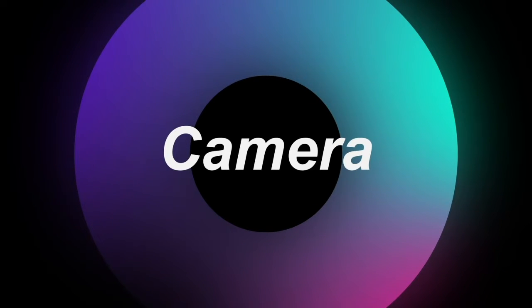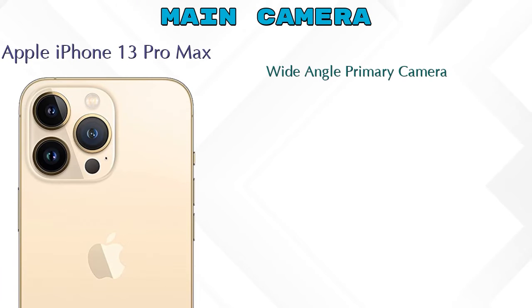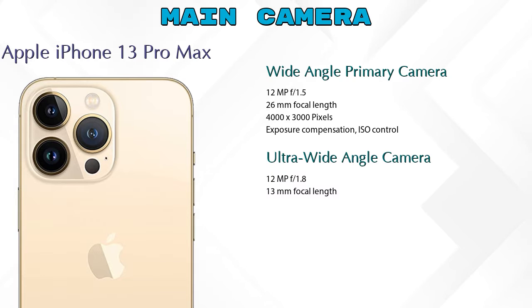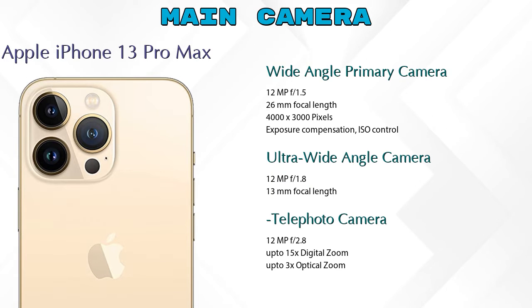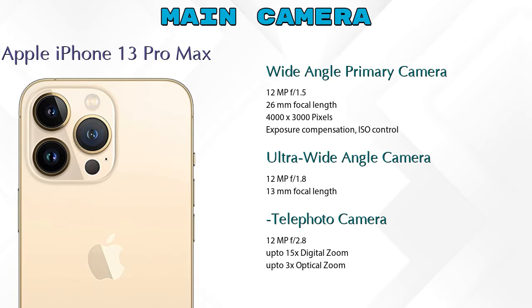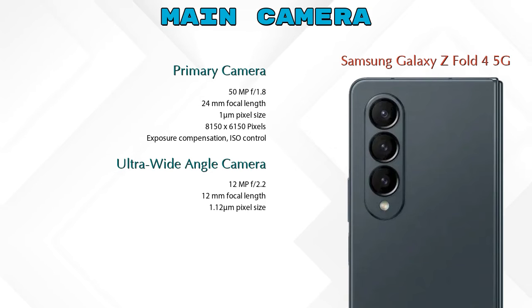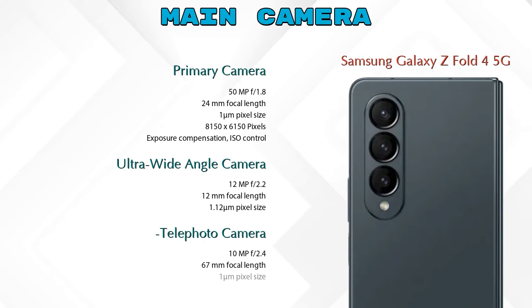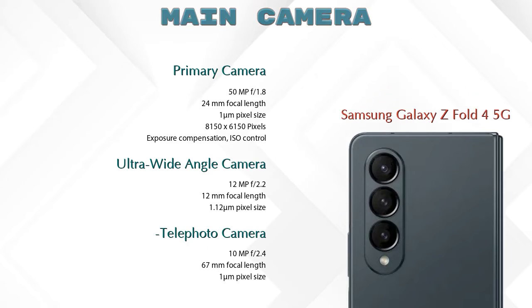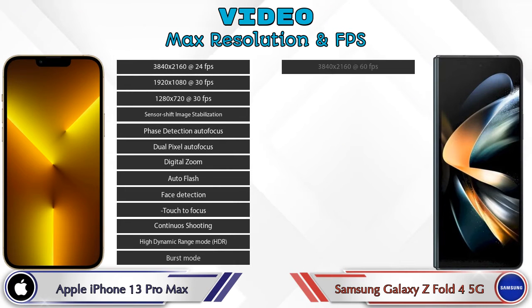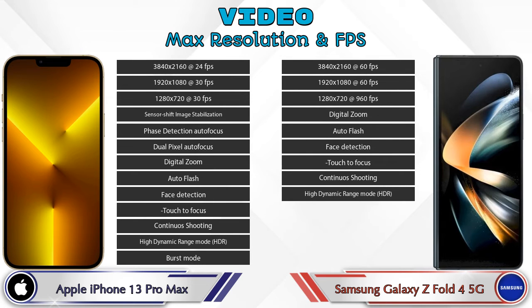Let's see the details about cameras. For the rear camera, the iPhone 13 Pro Max has three cameras: a wide-angle primary camera, an ultra-wide-angle camera, and a telephoto camera. The Z Fold 4 5G also has three cameras: a primary camera, an ultra-wide-angle camera, and a telephoto camera. For video camera scoring, the iPhone 13 Pro Max scores 13 and the Z Fold 4 5G scores 9.